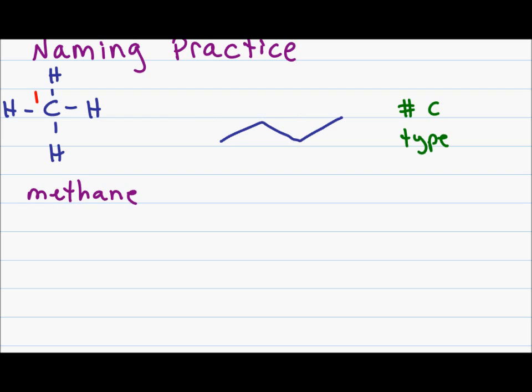For my next example, I will look at a line structure representation. If you are uncomfortable with line structure, refer to my previous video on how to draw and recognize these molecules. Since this is a longer molecule, I will first number the chain. I see that I have four carbons which is but. I only see single bonds which is ane, giving me a final name of butane.